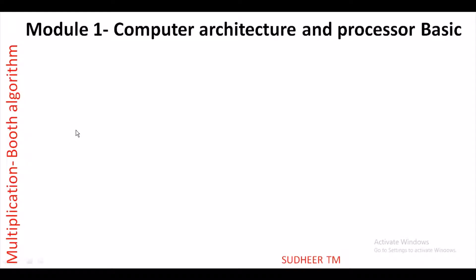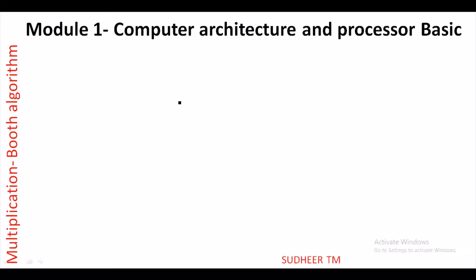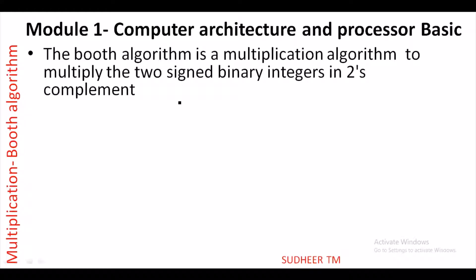Today's topic is Booth algorithm, a multiplication algorithm. Booth algorithm is the multiplication algorithm used to multiply two signed binary integers in two's complement form. Numbers are represented in two's complement, which is the popular way computer architecture represents numbers. It supports both positive and negative number representations and produces the product with the proper sign.